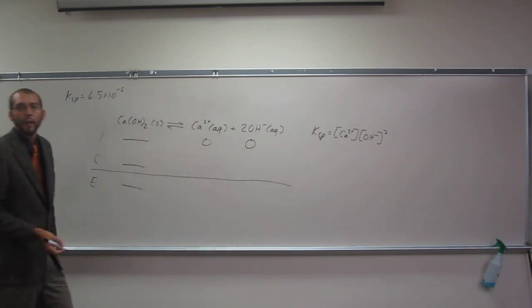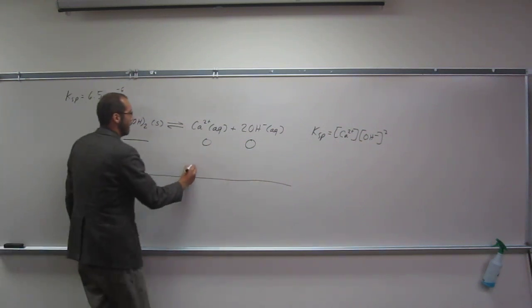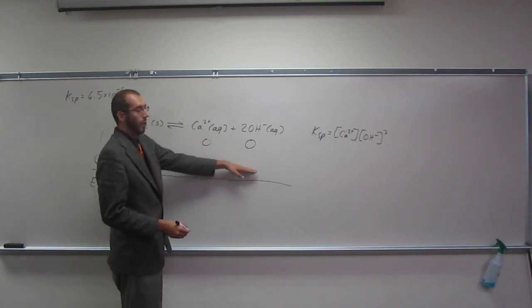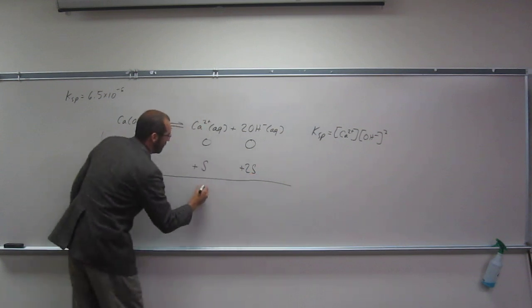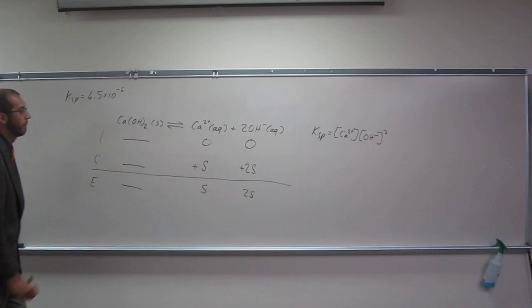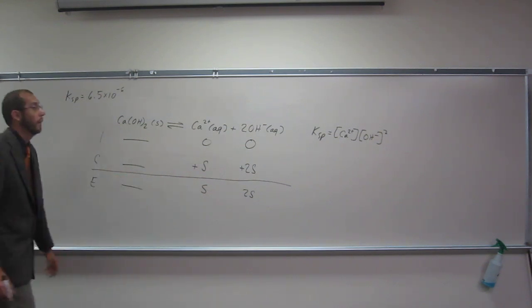In these particular ice tables, I like to use S instead of X to remind myself I'm doing solubility. So this is going to be plus S, and this one's going to be what? Plus 2S. Okay, so this is S, 2S. So we're looking for the solubility, for S there.